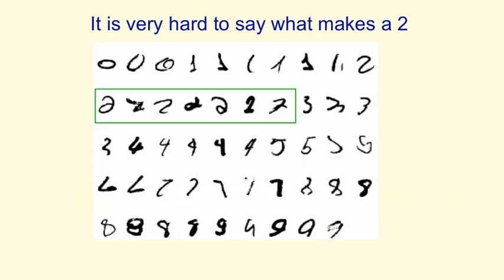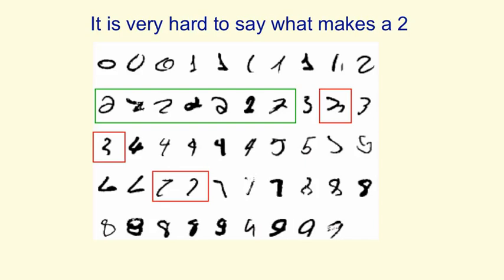If you look at a bunch of twos — like the ones in the green rectangle — you can see that if you knew they were a handwritten digit, you'd probably guess they were twos. But it's very hard to say what makes them twos; there's nothing simple that they all have in common. If you try to overlay one on another, even skewing it a bit, they don't fit — so a template isn't going to do the job. It would be very hard to find a template that fits the twos in the green box but won't also fit the things in the red boxes. That's one thing that makes recognizing handwritten digits a good task for machine learning.